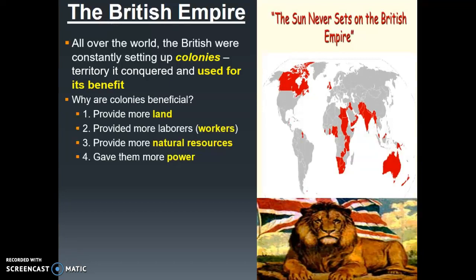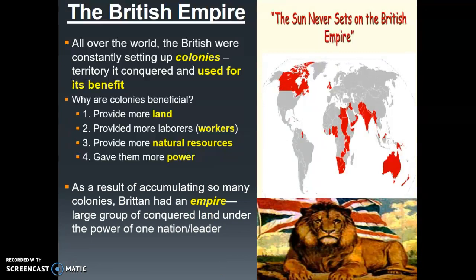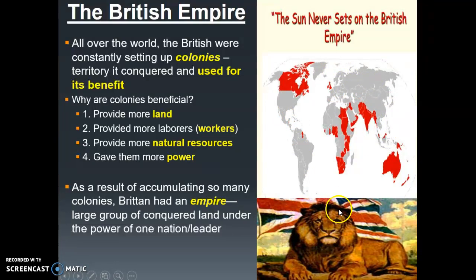When you've accumulated more land, more workers, and more natural resources as a result of gaining colonies, all of these things provide you with more power. So why would Great Britain — this tiny little island — go out and conquer all of these red areas and make them colonies? Because all of those territories provided more land, more workers, more natural resources, and therefore more power. As a result of accumulating so many colonies, Britain had an empire — a large group of conquered land under the power of one nation or leader. The entire red section on the map is being controlled by the British, who are taking all the benefits of controlling those different territories.